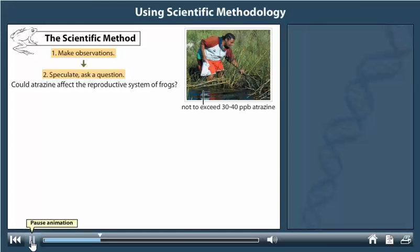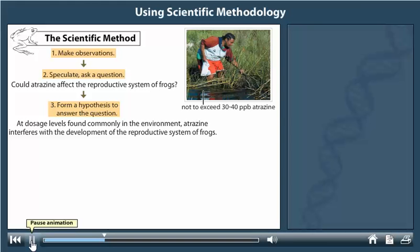In answer to the question, the investigator forms a tentative proposition called a hypothesis. One possible hypothesis can be stated this way: At dosage levels found commonly in the environment, atrazine interferes with the development of the reproductive system of frogs.